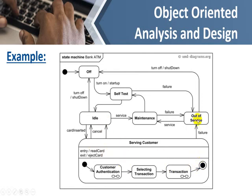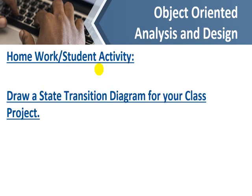Taking one part at a time — self-test, idle, transaction, transaction done or cancel, back to idle — makes the diagram easy to understand. During a transaction, if there is a failure, it goes out of service. From idle it can go to maintenance, then self-test, then idle again. Your homework is to draw a state transition diagram for your class project, showing all the states your software will take, and submit it in the next class. Thank you very much.